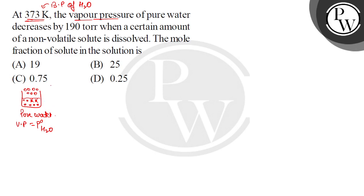So when solution is made, after non-volatile solute is added, its vapor pressure P is less than P⁰H₂O. This difference P minus P⁰H₂O is equal to one ninety torr. The decrease is 190 torr.